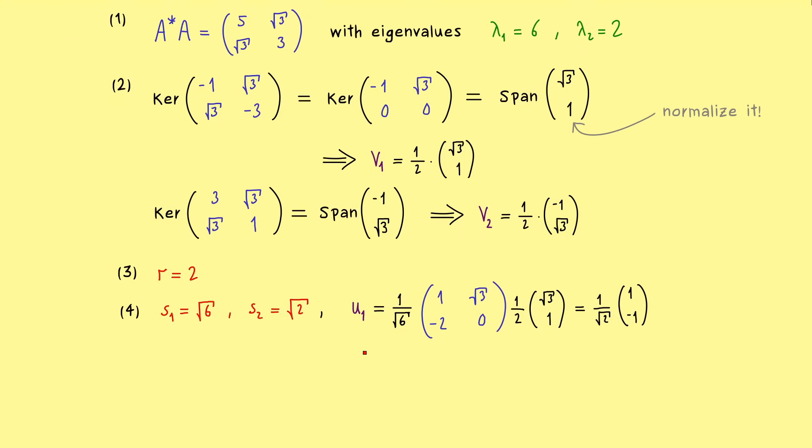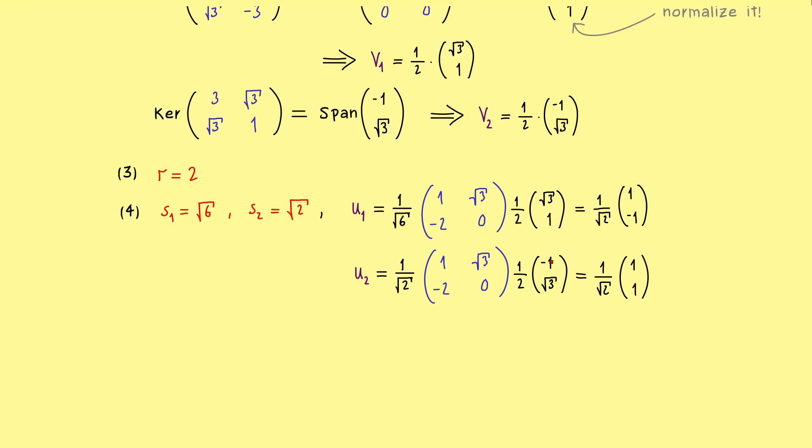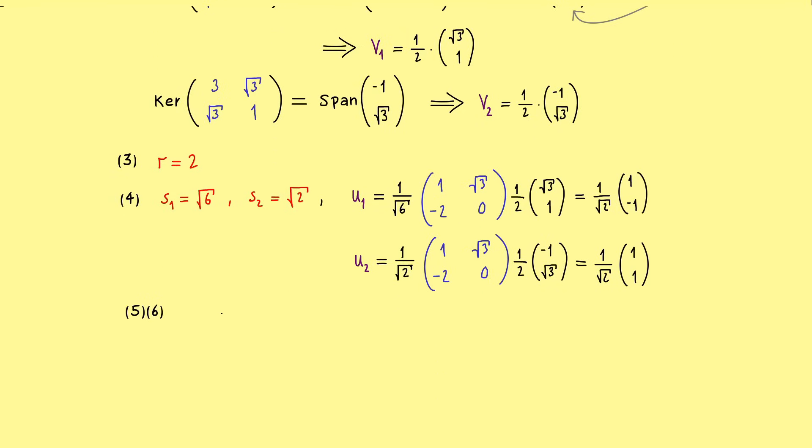And in a similar way, we also get u2. The only difference is that we have the second singular value and the second v vector. So what we get out is also 1 divided by the square root of 2, times 1, -1. So there we have it. In fact, these two vectors already form a basis of C^2. So we don't need to extend it. Hence in this case, there is nothing to do for step 5 and 6.